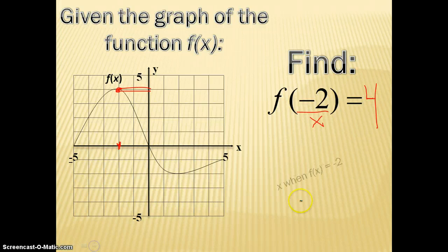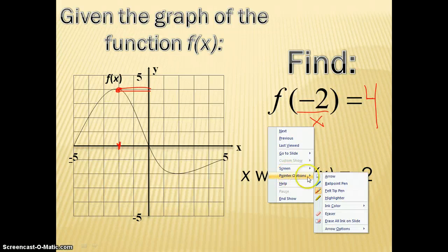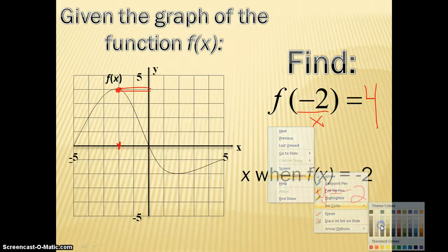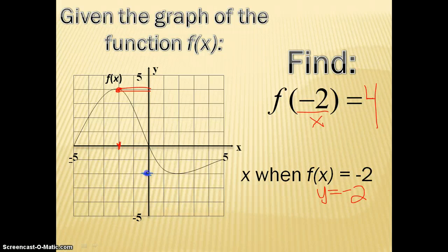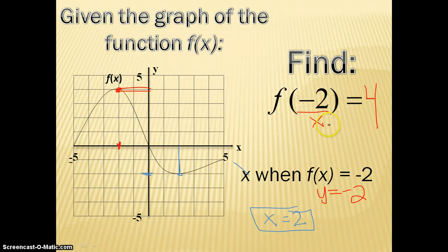What if it said: find x when f of x is negative 2? Remember, f of x is y, so we're asking: when y equals negative 2, which is right here on the graph, what is my x value? My x value is 2. So x equals 2. Remember: if it's in parentheses, it's your x; if it equals something, it's your y.